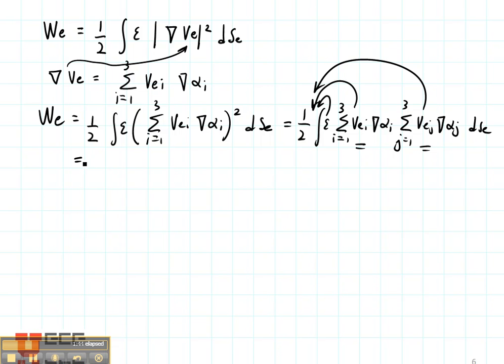So that gives us an elemental energy that looks like this. 1 half and then a double summation. I equals 1 to 3, J equals 1 to 3. And let's put Epsilon right here outside of all of that times VEI. And then we're going to have this integral gradient of Alpha I dotted with gradient of Alpha J integrated over the element multiplied by VEJ.